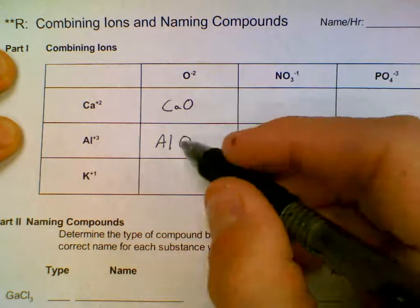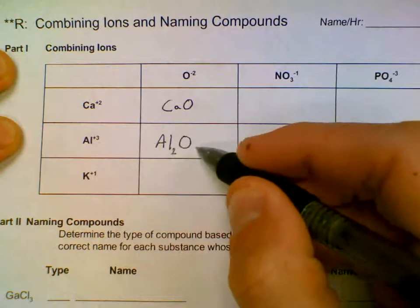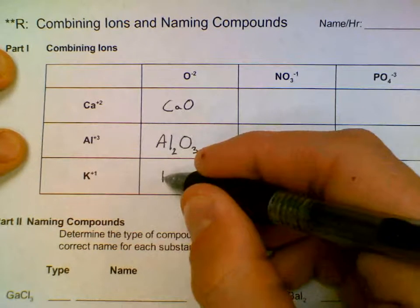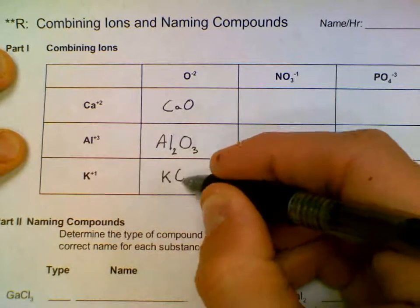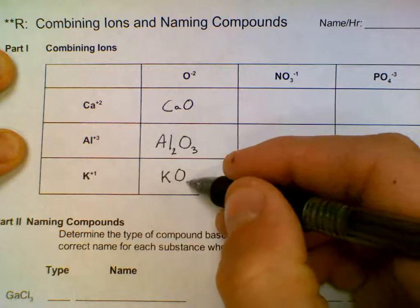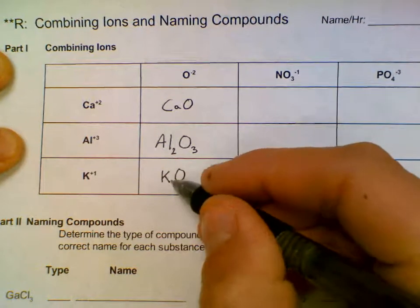Al2O3: 2 on the O goes on the Al, 3 on the Al goes on the O. K2O: the 1 on the K goes on the O, we don't need to write it. The 2 on the O goes on the K.